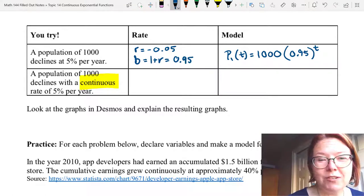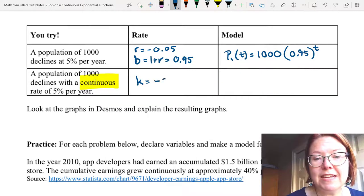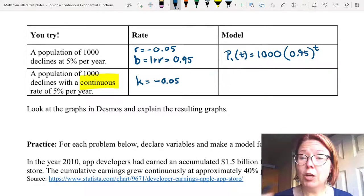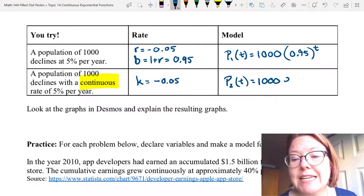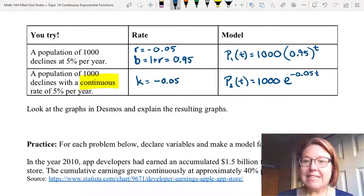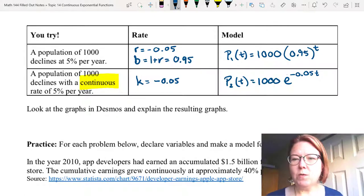For the second scenario, we have continuous exponential growth, which means we're using a k value, and that k value is negative 0.05. Our model would be P₂(T) equals 1,000e^(-0.05T). Let's take a look at those graphs in Desmos and see if we can explain what happens.